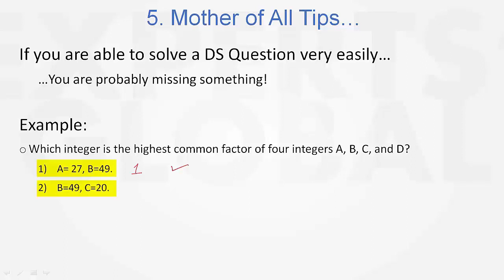Look at statement 2 now. Same thing, b and c have nothing in common. So no matter what a and d are, the highest common factor is going to be 1 only. And therefore, statement 2 is also sufficient.